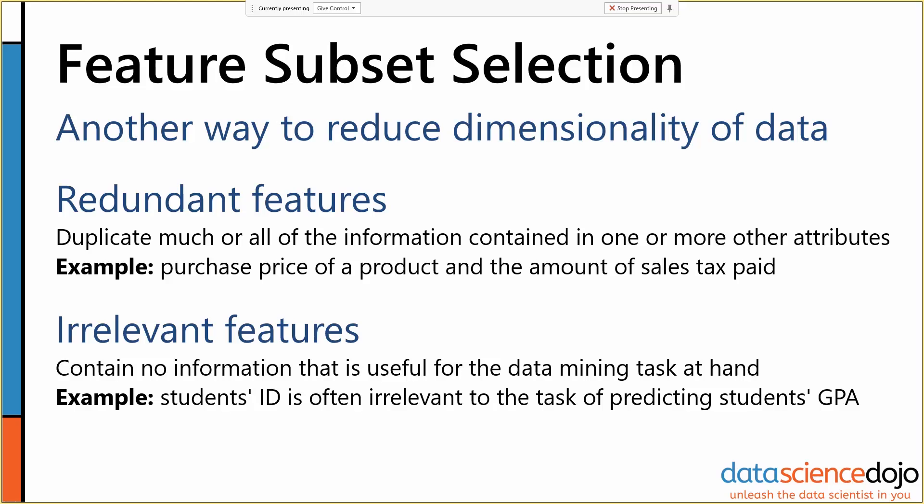Same thing with irrelevant features. A student's ID number, the vast majority of the time, is irrelevant to the task of predicting a student's GPA. And these types of redundant and irrelevant features don't just harm us via increased dimensionality. Redundant features effectively weight features multiple times. If we have the same information contained in two separate columns that the model thinks are both important, we've double-weighted that information.